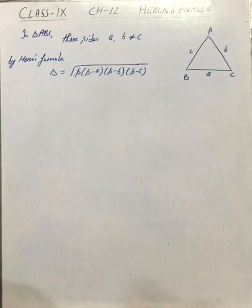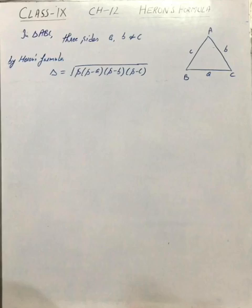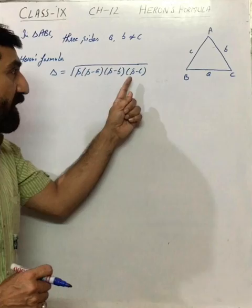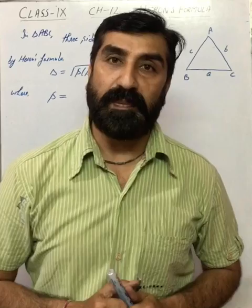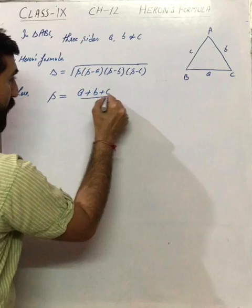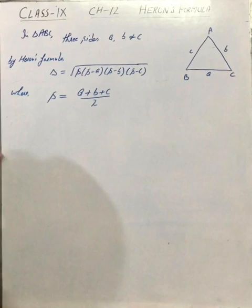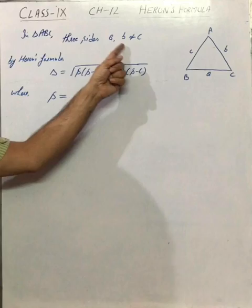You have already done it in previous classes also. So formula is S, S minus A, S minus B, S minus C. Now what is S here? S is semi-perimeter of this triangle. Semi-perimeter of triangle means half of the perimeter, and what is perimeter? Perimeter means sum of three sides, length of the boundary. S is semi-perimeter divided by two. This is the formula which is applied to find the area where you are given three sides.